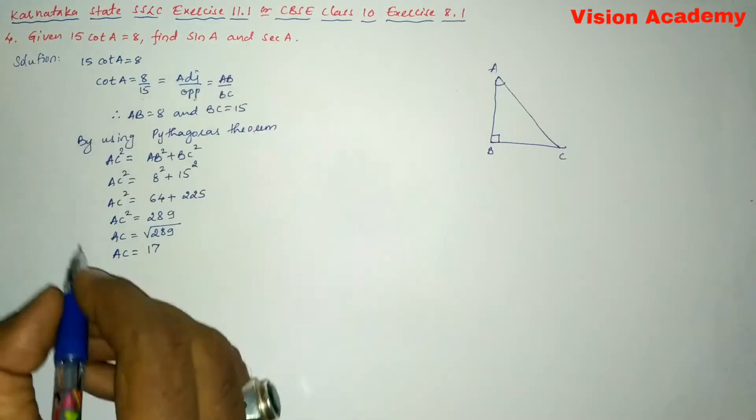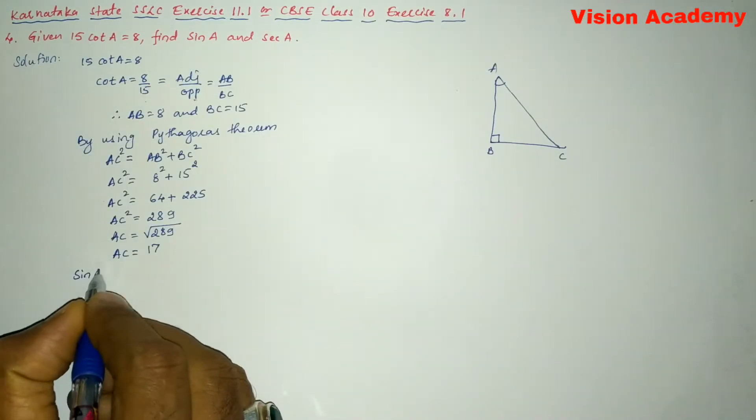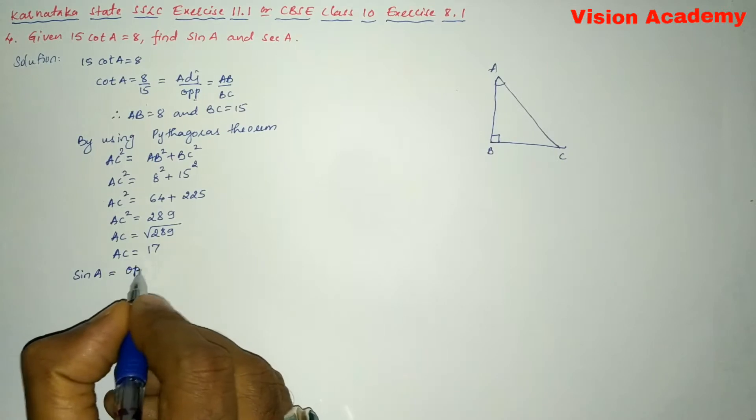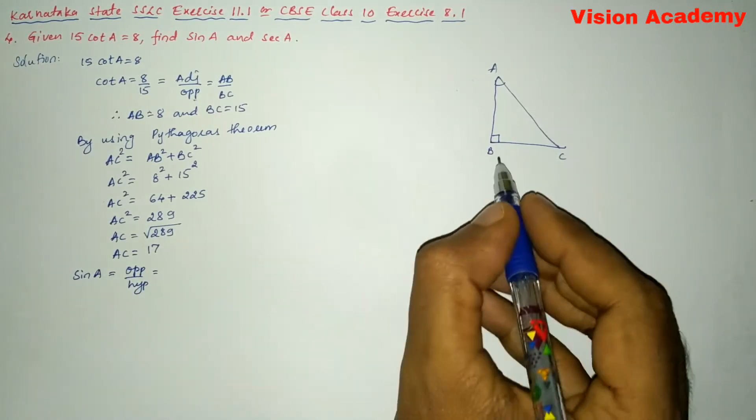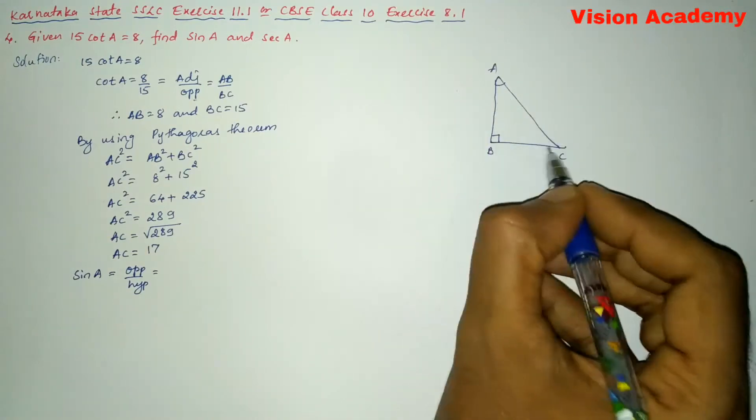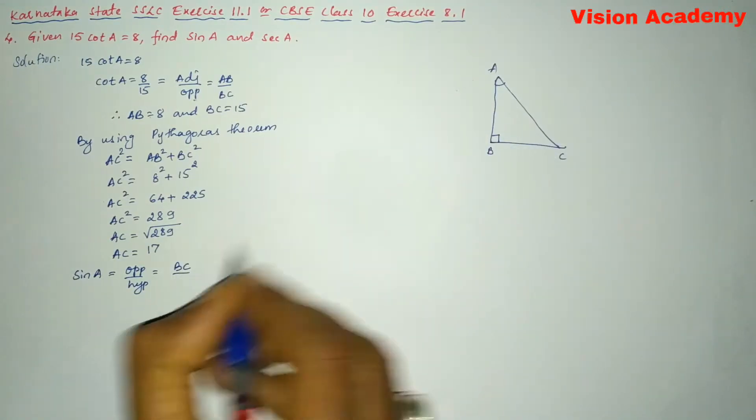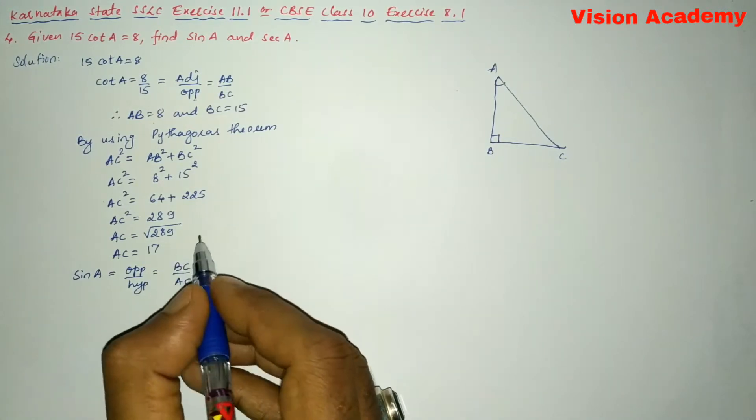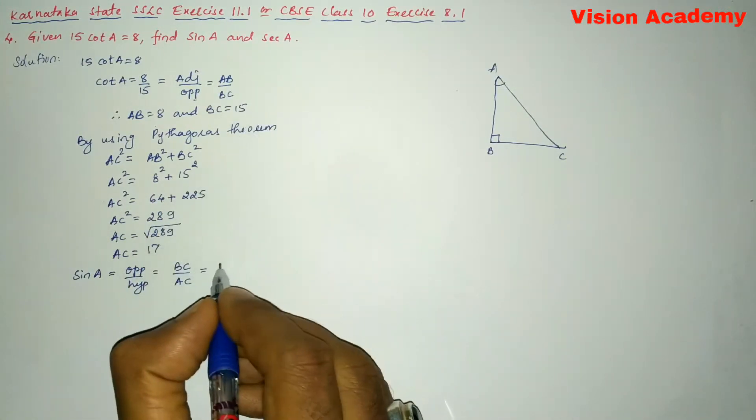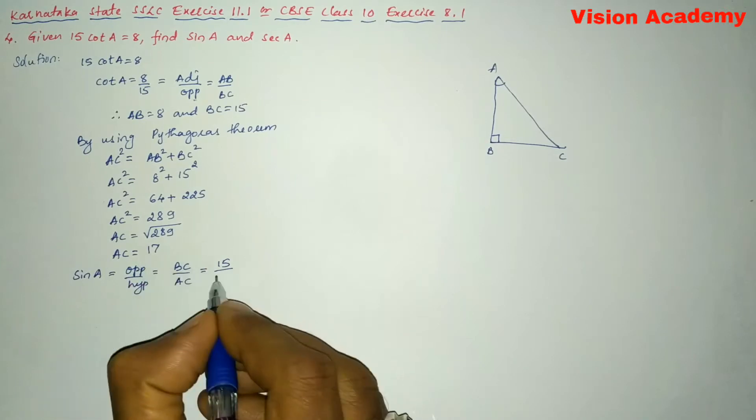Now we can write sin A is equal to... sin A is opposite by hypotenuse. So here, opposite to the angle A is BC, and hypotenuse is AC. So here we will write BC is 15 and AC is 17.